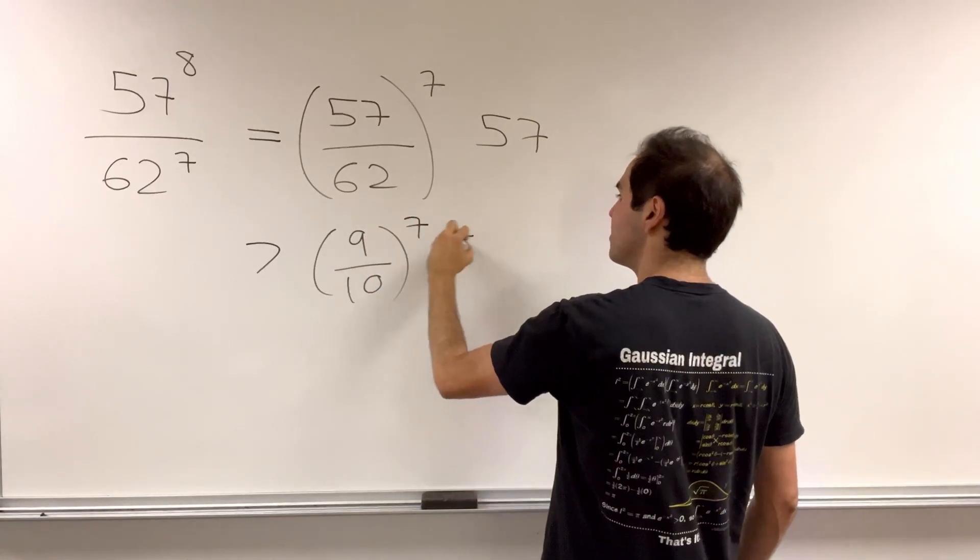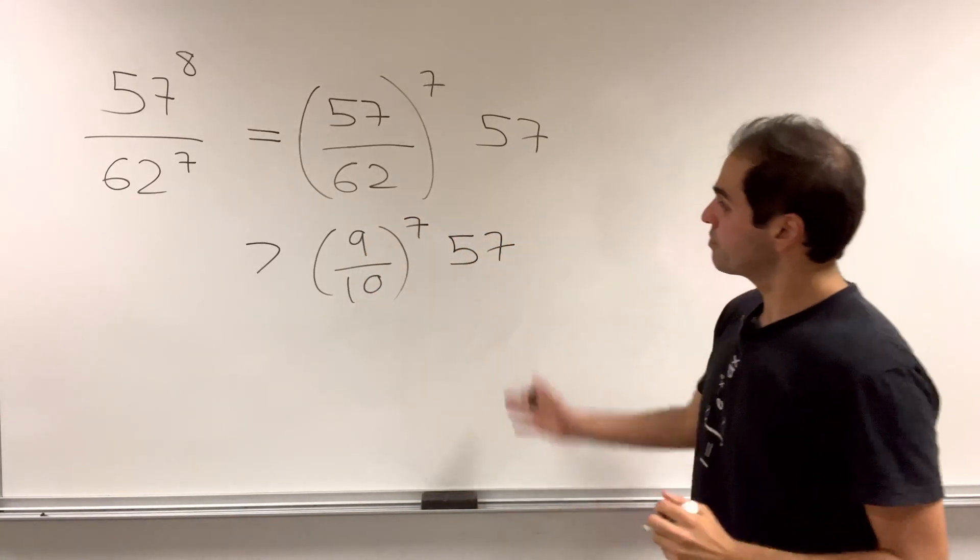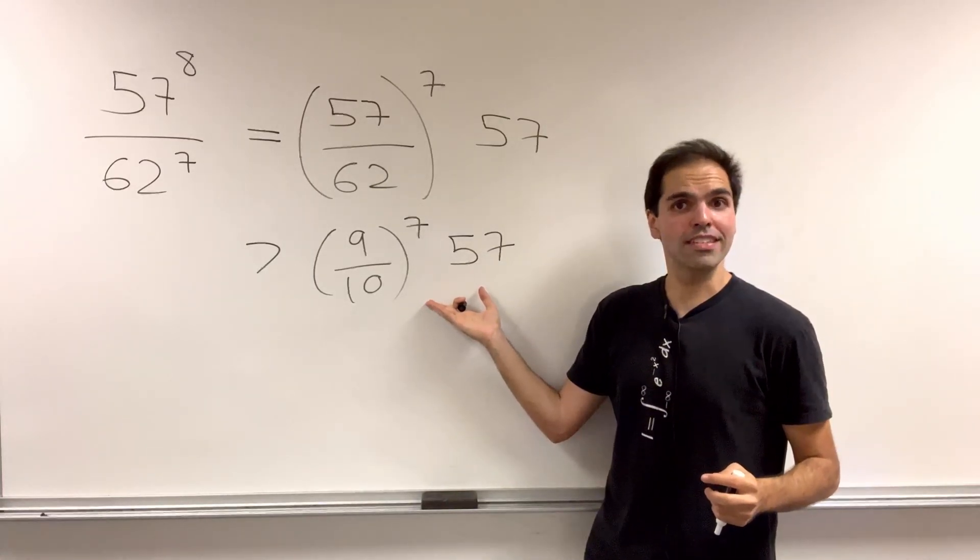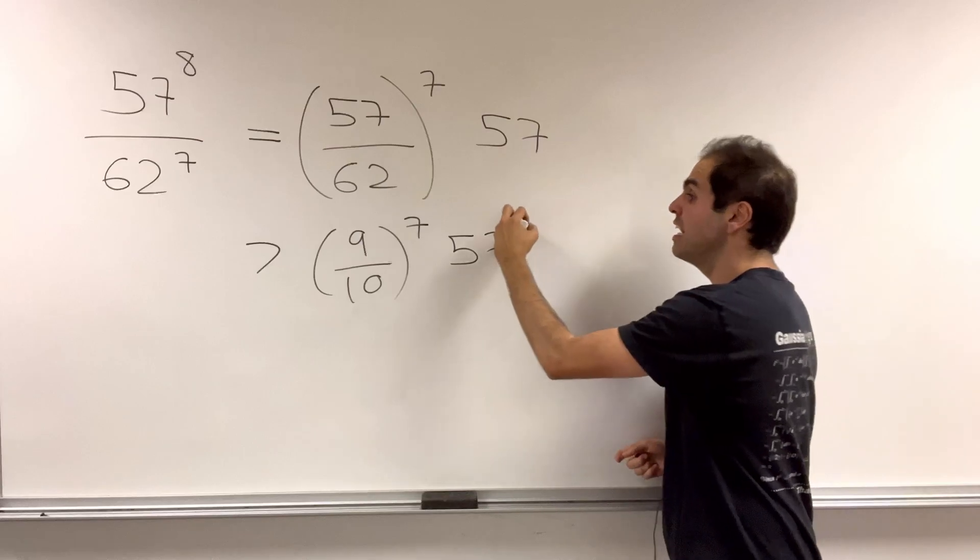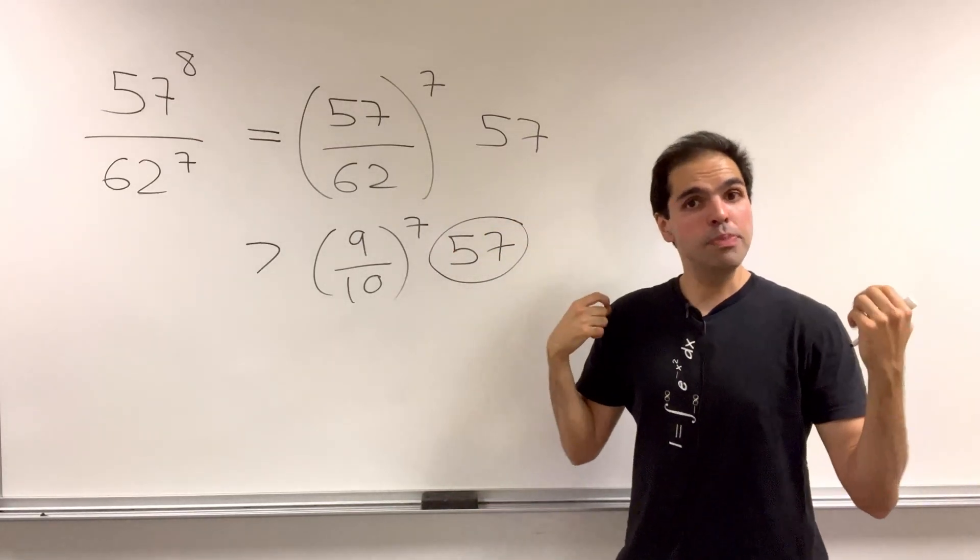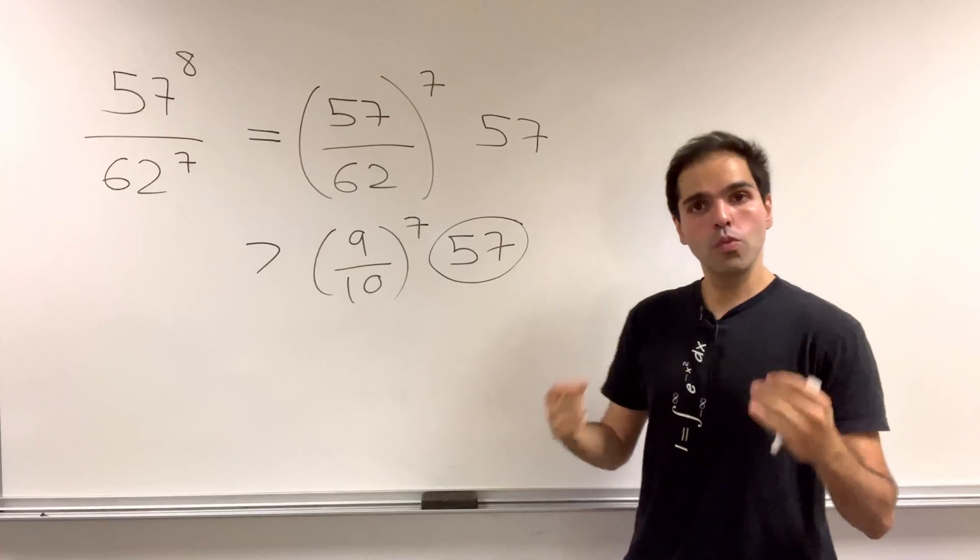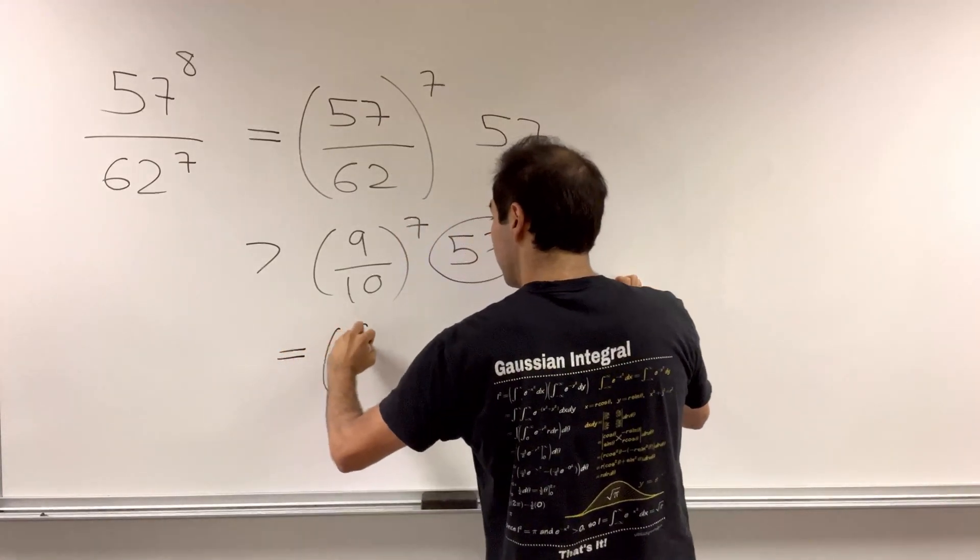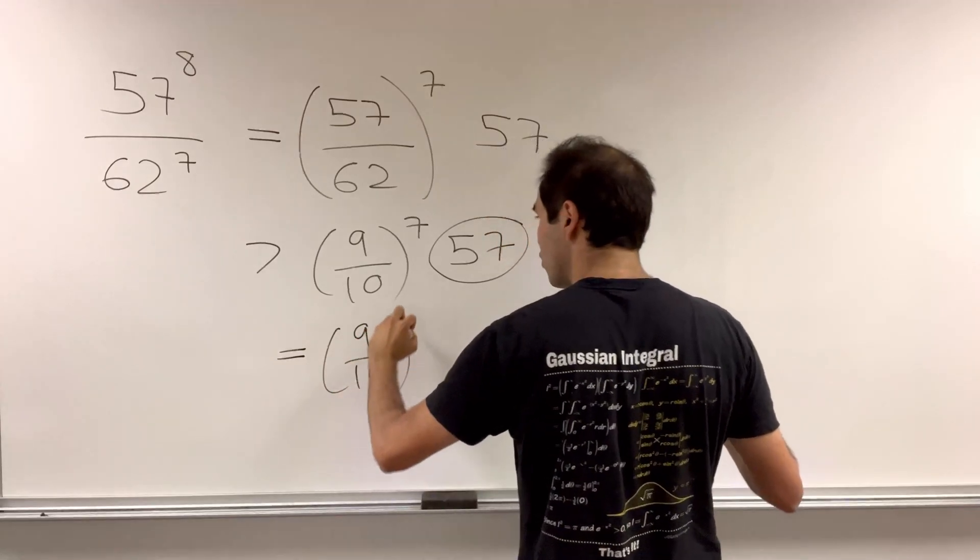So 9 tenths to the 7th times 57. Ideally we would like to write this also as a 7th power, but luckily 57 is bigger than 32, which is 2 to the 5th, which can be written as 2 to the 7th over 4.